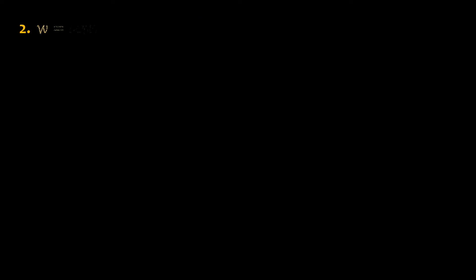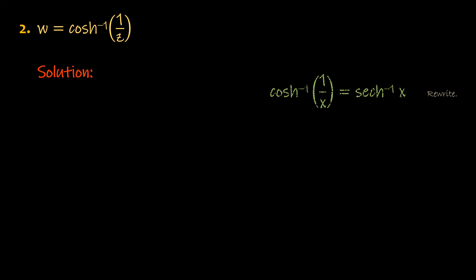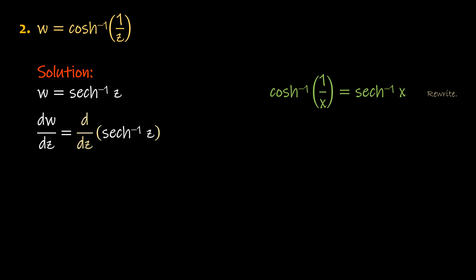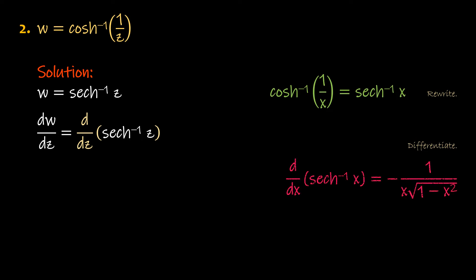Number 2: w equals the inverse hyperbolic cosine of 1 over z. Solution: The function does not fit exactly into a basic inverse hyperbolic function rule. However, we can rewrite it using a reciprocal identity. w becomes the inverse hyperbolic secant of z. dw/dz is the derivative of w with respect to z. Differentiate using an inverse hyperbolic function rule. Thus, dw/dz equals the negative of 1 all over the product of z and the square root of quantity 1 minus z squared.